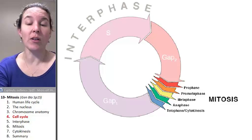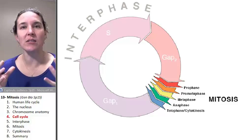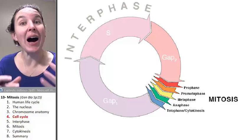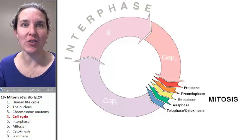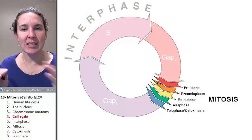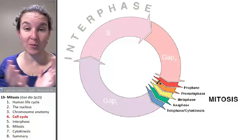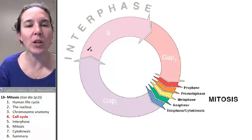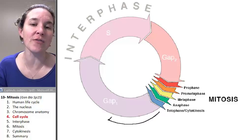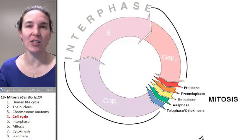Let's take a look at the cell cycle. The cell cycle is the entire life cycle of a cell that includes possibly mitosis or nuclear division. If we were to throw the stages of the cell cycle onto a little circular image, what you would see is that the cell is in a stage called interphase most of the time. All of that is interphase.